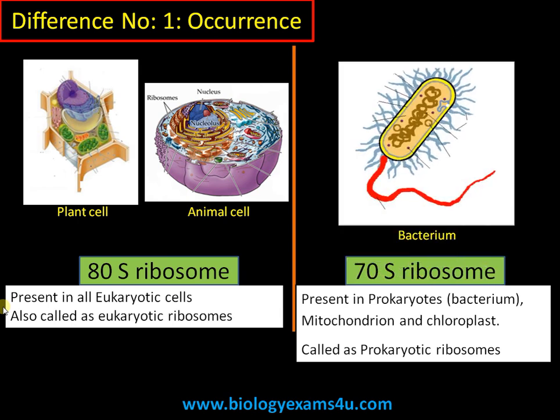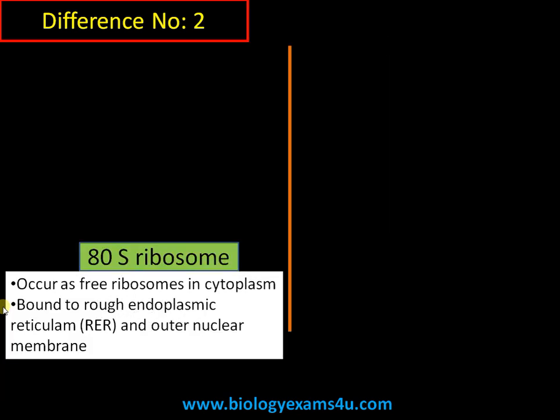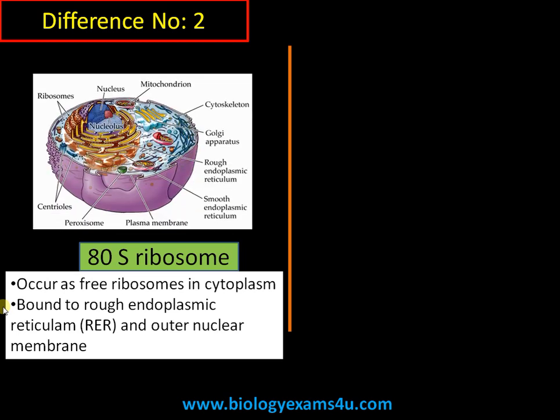Difference number two concerns location within the cell. 80S ribosomes occur as free ribosomes in the cytoplasm, and can also be found bound to the rough endoplasmic reticulum (RER) and the outer nuclear membrane. The rough endoplasmic reticulum is involved in the synthesis of secretory or excretory proteins.